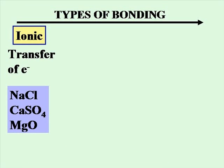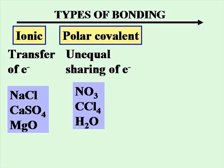An extreme difference in electronegativity gives you a transfer of electrons in an ionic compound. This would be metals and non-metals: sodium chloride, calcium sulfate, magnesium oxide. Polar covalent bonds would be between non-metals that are not the same and do not have an equal sharing of electrons, like nitrogen trioxide, carbon tetrachloride, or water.